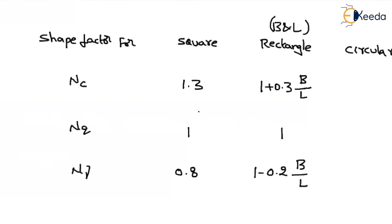If it is a circular footing, the shape factor for Nc is 1.3, for Nq it is 1, and for Nγ it is 0.6.